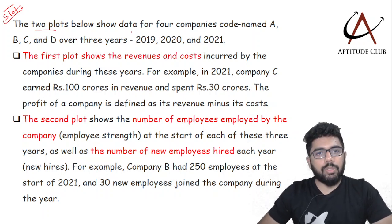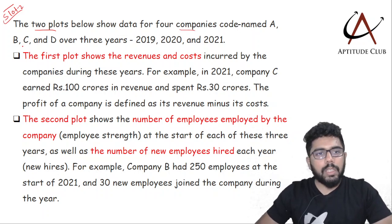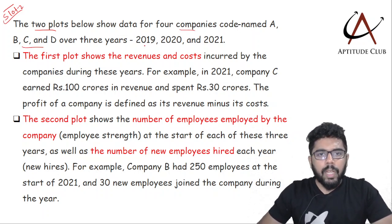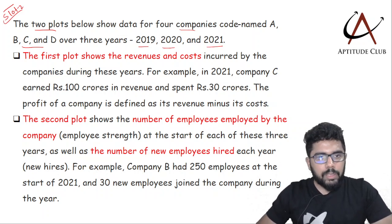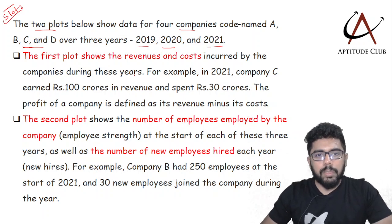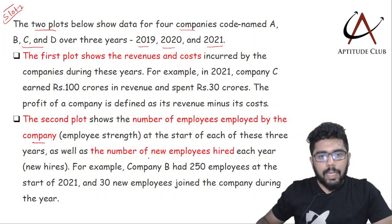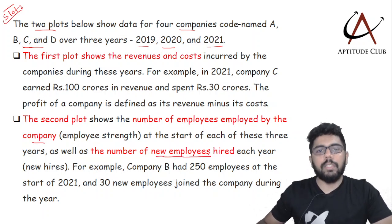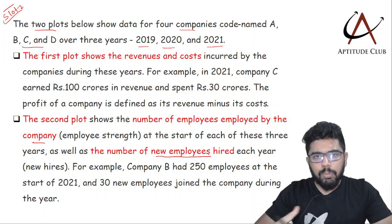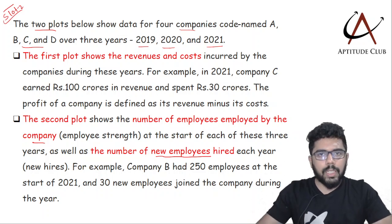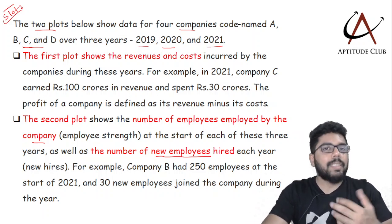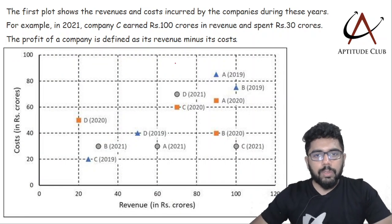Basically there are two plots. The two plots show data for four companies code-named A, B, C, and D, for three years: 2019, 2020, and 2021. The first plot shows the revenues and costs incurred by the companies, and the second plot shows the number of employees employed as well as the number of new employees hired. Let's take a look at the first plot.